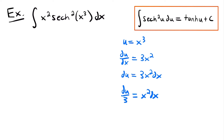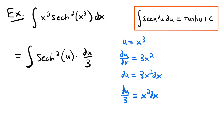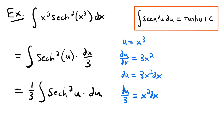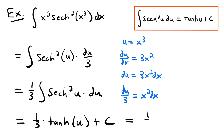We can now rewrite the integral in terms of u: the integral of sech²(u)·(du/3). Pulling the 1/3 out front gives (1/3) times the integral of sech²(u) du, which matches our integration rule and integrates into the hyperbolic tangent function. So this equals (1/3)·tanh(u) + c. Replacing u with x³ gives the final solution: (1/3)·tanh(x³) + c.